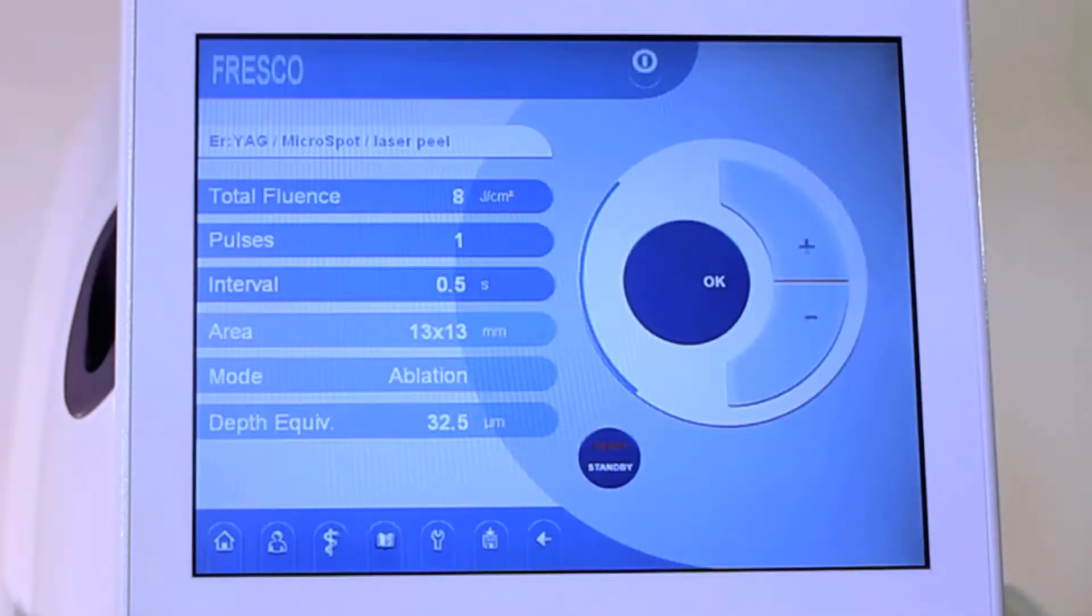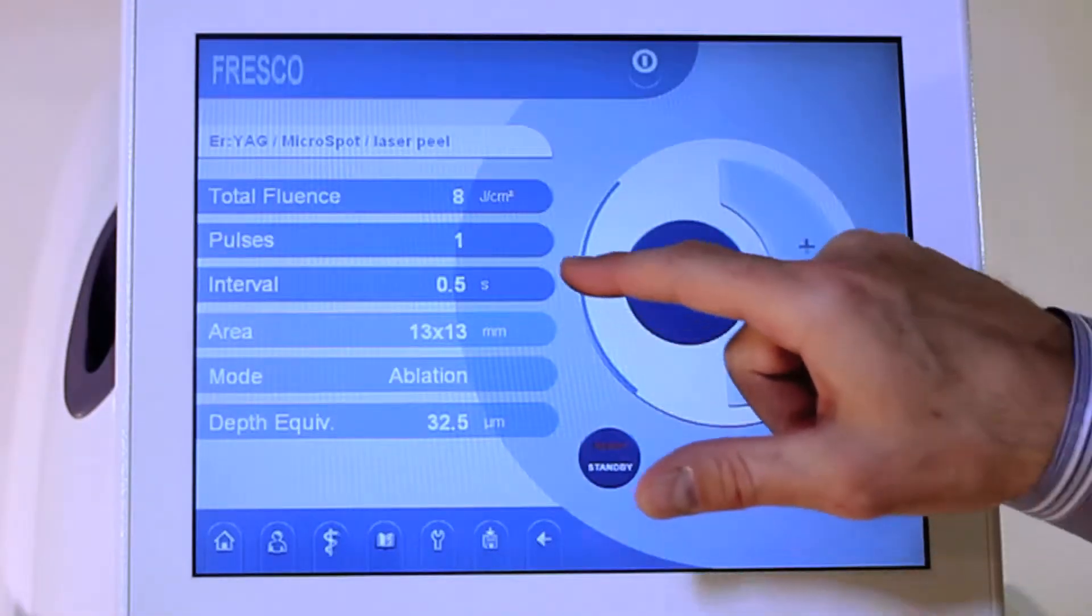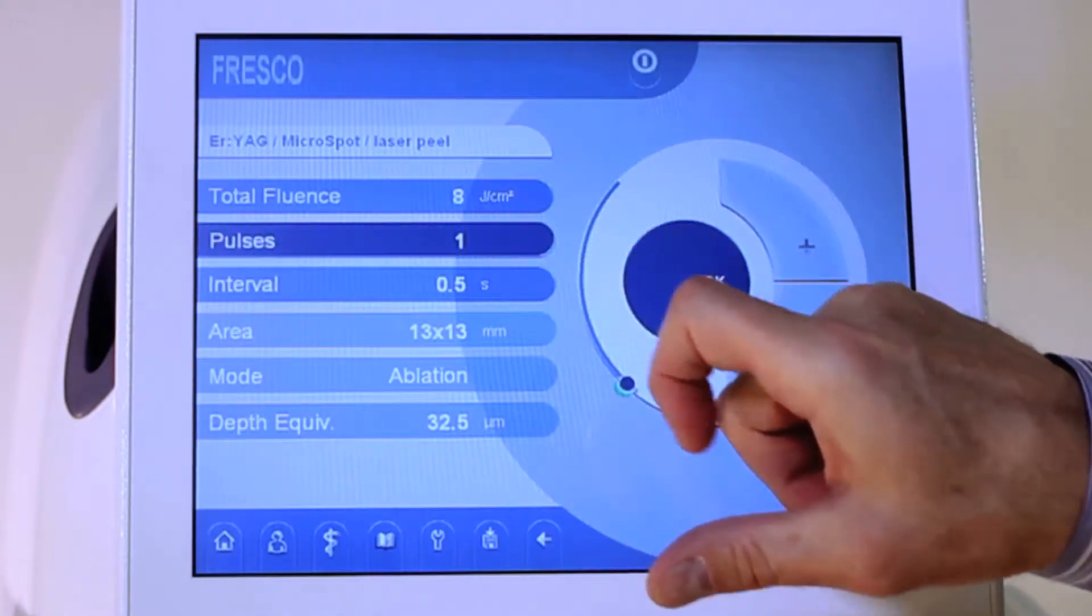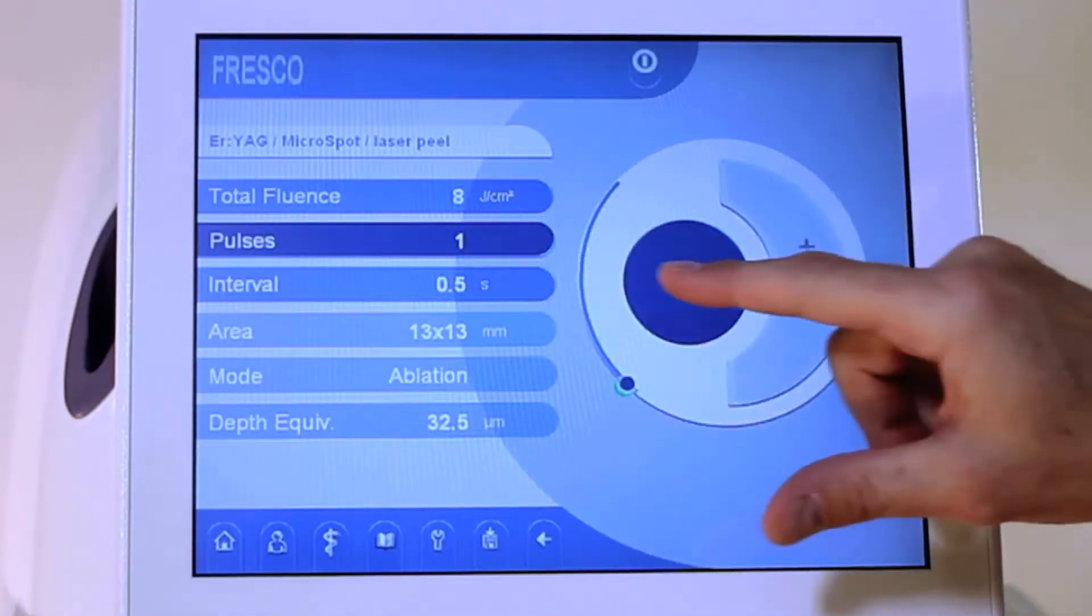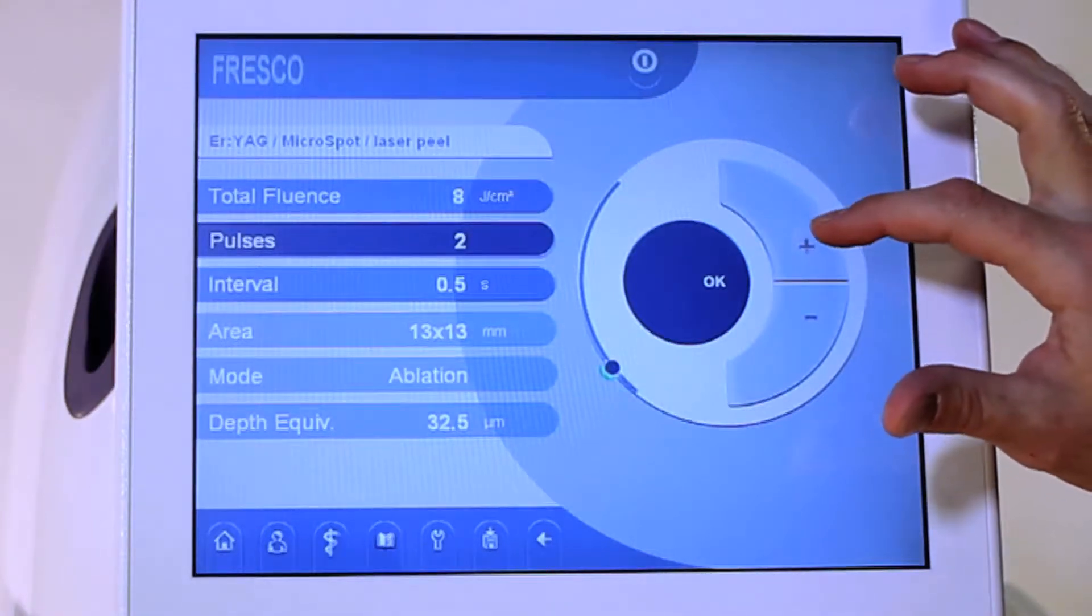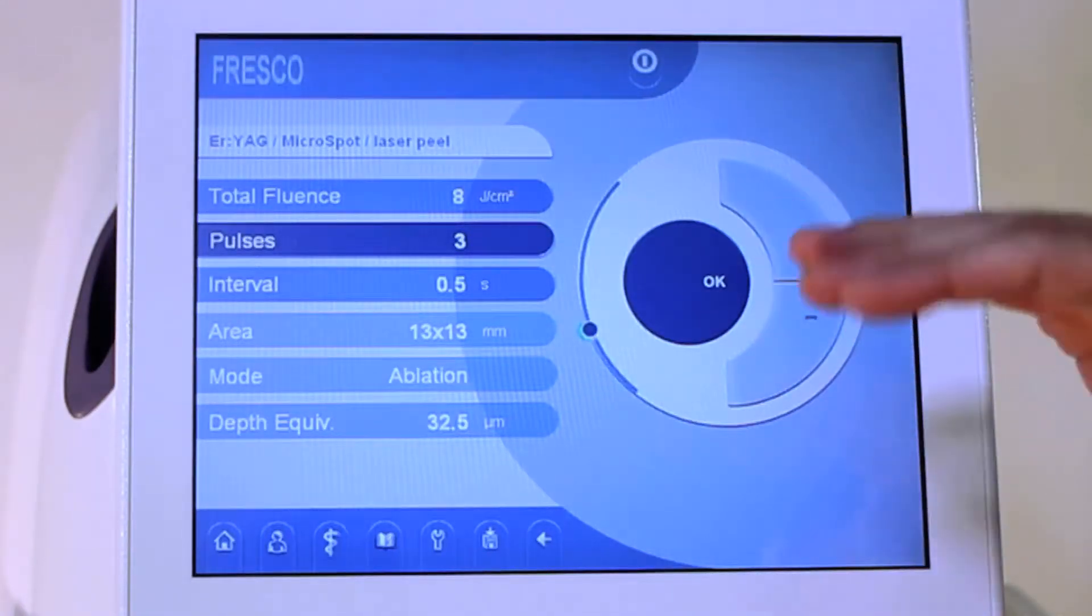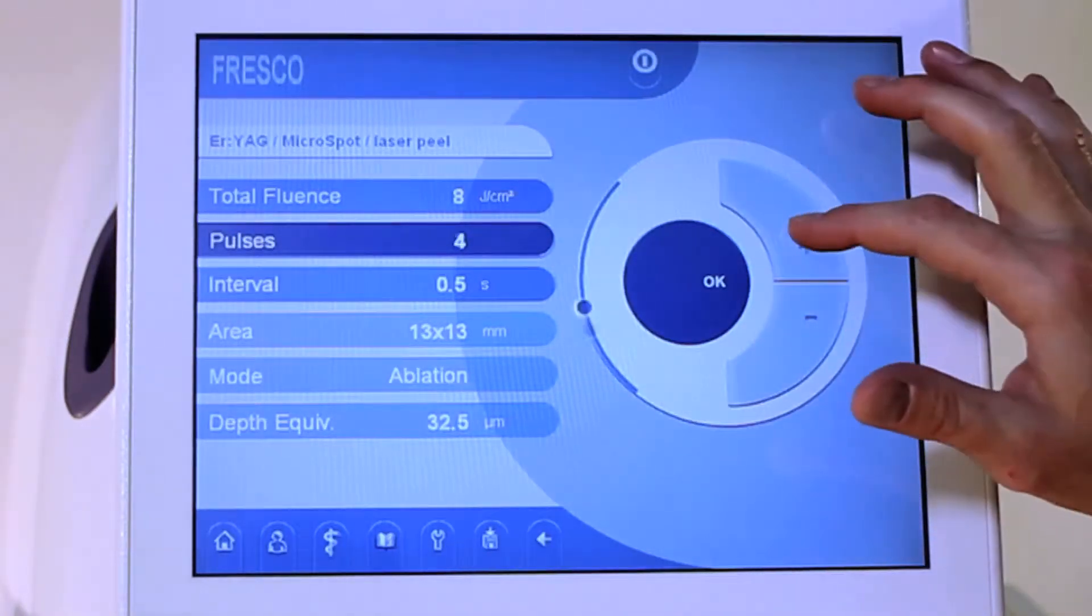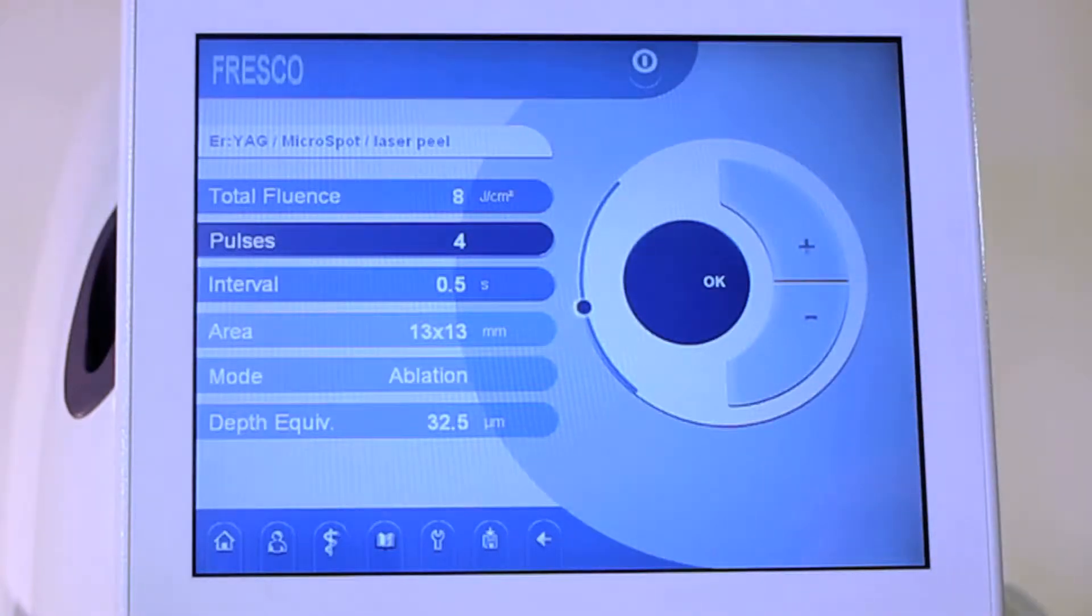This is the micro laser peel setting. If we wanted to go more aggressive, we could make several changes. When you highlight an area, then you come over here, and this is going to target the number of pulses that are being delivered each time. We'll fire it in a moment.